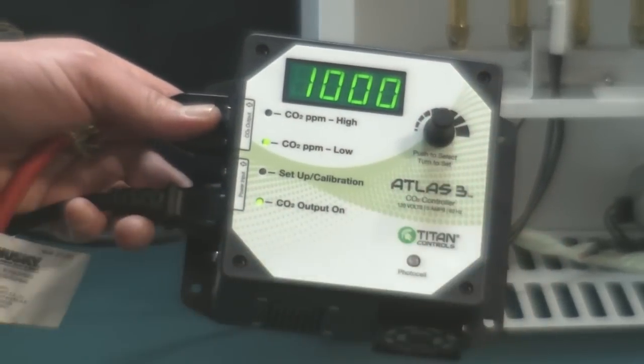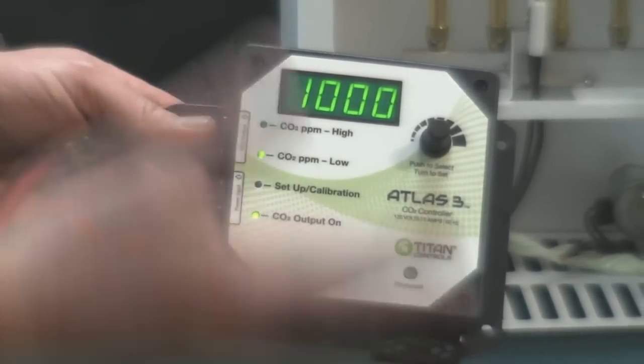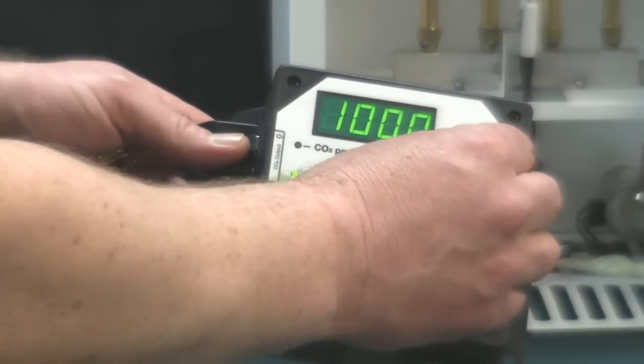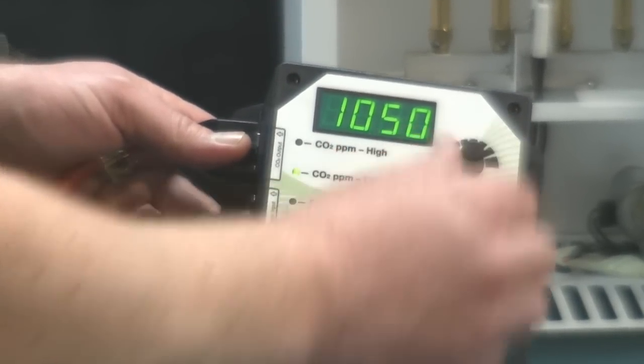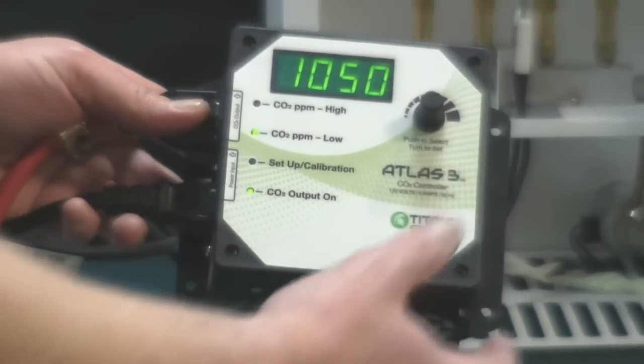The next thing I want to do is set my low number. This is when it's going to activate at the low end. So I'm going to set that at 1,050, that will give me a 200 parts per million hysteresis.